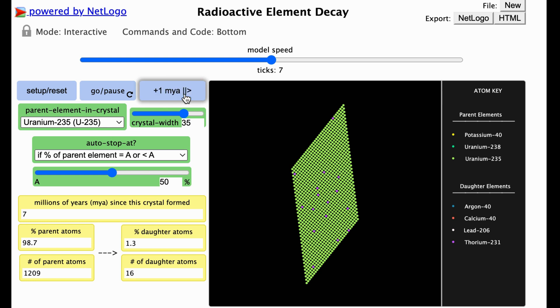Notice that some of the atoms change color as I do this. This indicates that they underwent radioactive decay during that time period. If you press go pause, the model will continuously go forward in time until this auto stop condition is met.